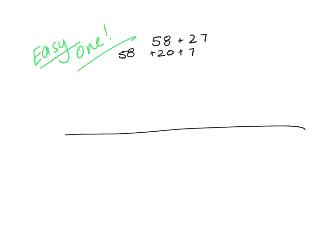On a number line, I do not need to start from 0 — I can start from 58. If I add 20, then 58 plus 20 makes 78. I then add 7, and 78 plus 7 equals 85. That is one way to show this equation on a number line.